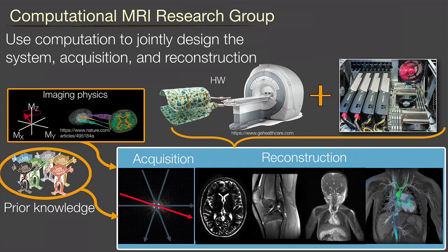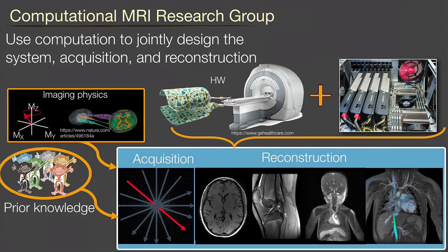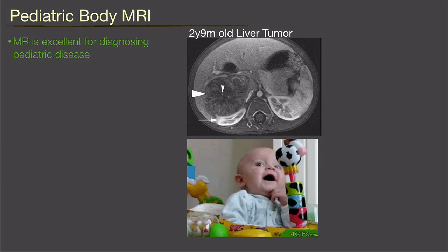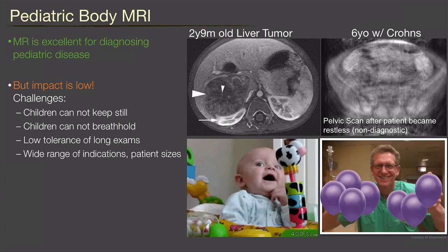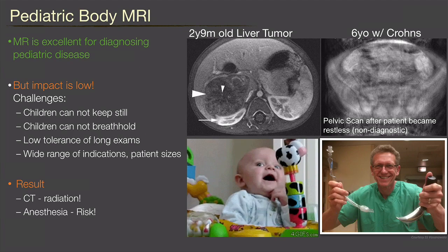This is a multi-disciplinary area — it covers both sides of EECS but also other disciplines. Now let me talk about pediatric body MRI. MRI is really excellent for diagnostic pediatric disease — it has excellent contrast — but there are huge challenges when imaging pediatric patients. Children cannot keep still, they don't understand the notion of breath hold, they have really low tolerance for a long exam, and a super wide number of indications. As a result, they are either referred to CT, which has associated radiation and increased cancer risk, or put under anesthesia, which also has associated risks.